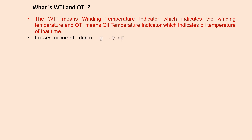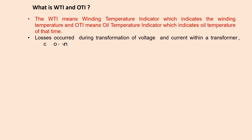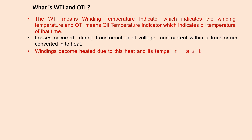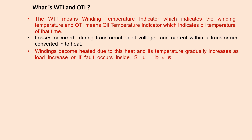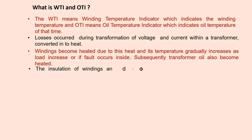Losses occurring during transformation of voltage and current within a transformer are converted into heat. The winding becomes heated due to this heat and its temperature gradually increases as load increases, or if a fault occurs inside. Subsequently the transformer will also become heated.